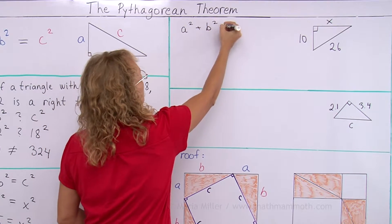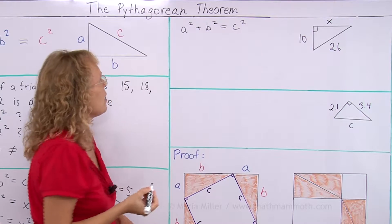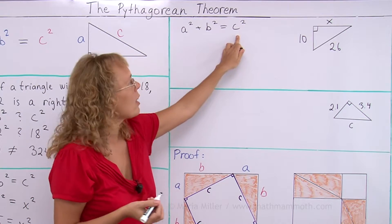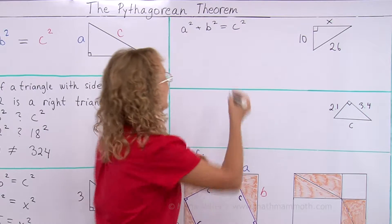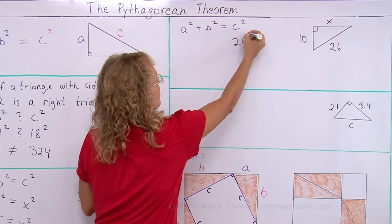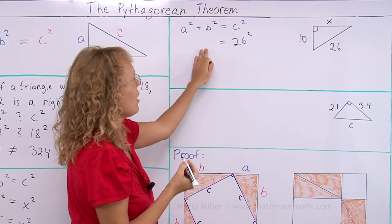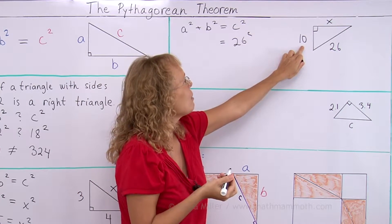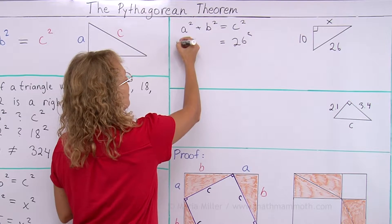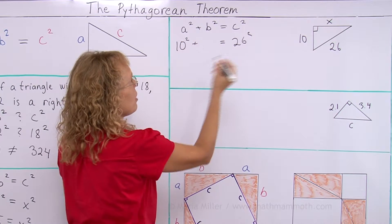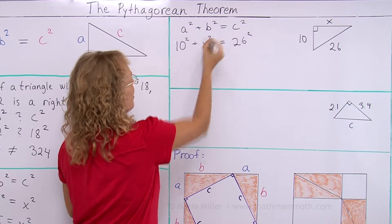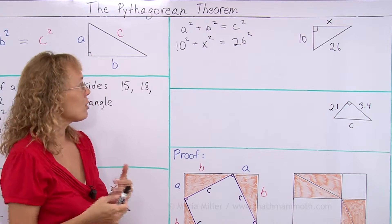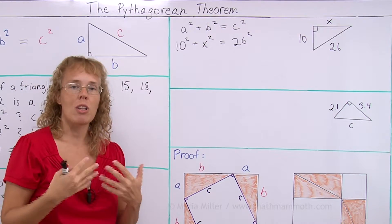Let me write the Pythagorean theorem and figure out a, b, and c. C is the longest side — that's 26. For a and b, you can choose either. Let me say a is 10, so I write 10 squared, and then b is x, so I write x squared. The equation is 10 squared plus x squared equals 26 squared. Now I solve this equation using normal methods.